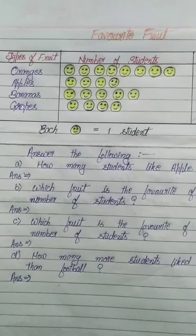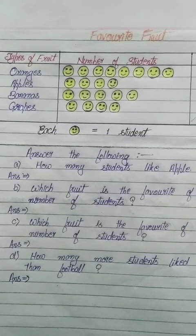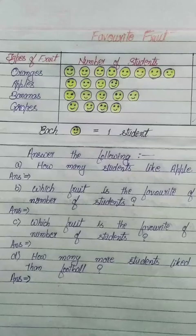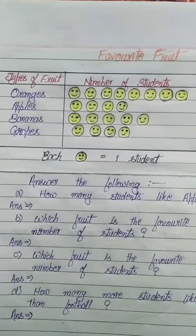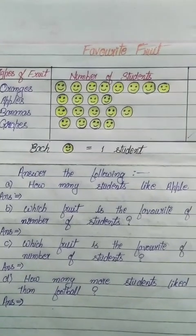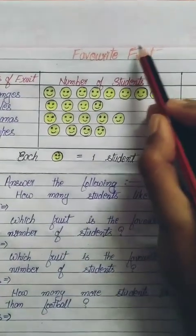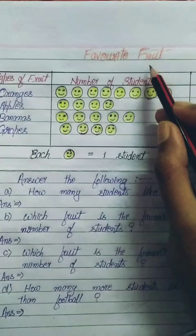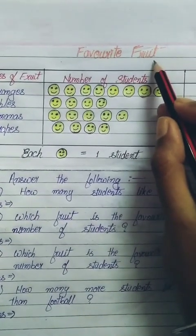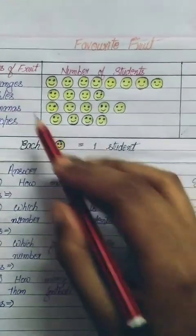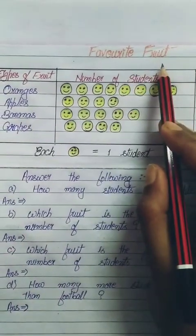When we use pictures or symbols to represent such data, it is called pictorial information or pictograph. A pictograph has three important components. The first one is title. Here I have written the title of the pictograph: 'Favorite Fruit.' This title means the pictograph contains information about the favorite fruit.